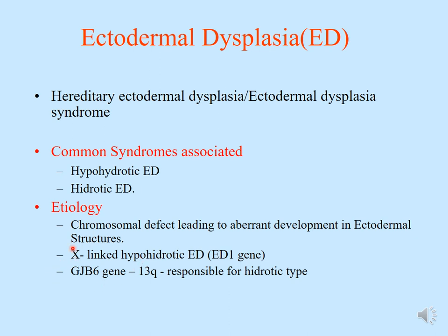The etiology for this condition is a chromosomal defect leading to aberrant development in ectodermal structures. It is X-linked, affecting the hypohidrotic ectodermal dysplasia gene or ED1 gene. The specific gene is GJB6, present on chromosome 13q — Q standing for the long arm — and this gene is responsible for the hypohidrotic type.